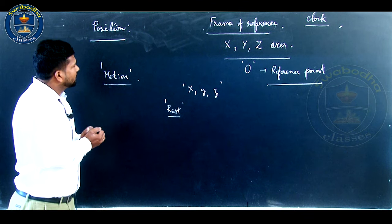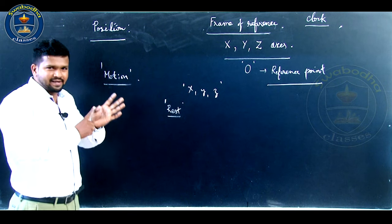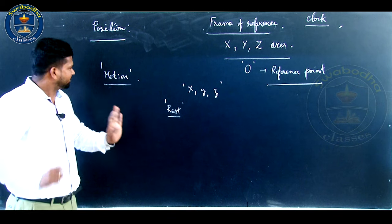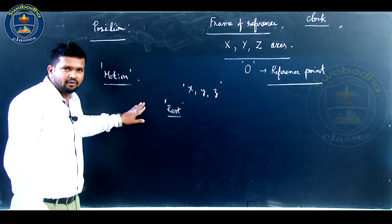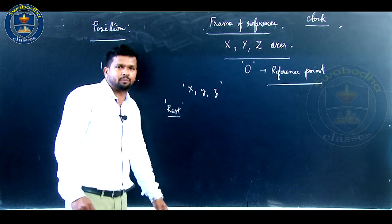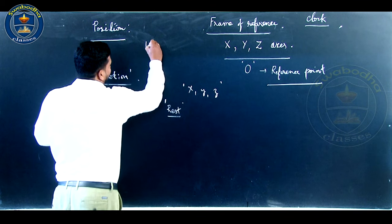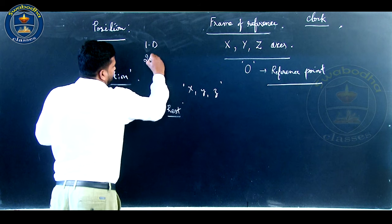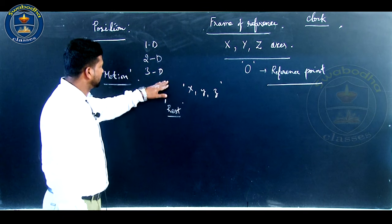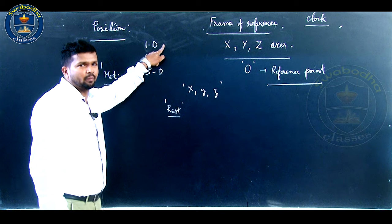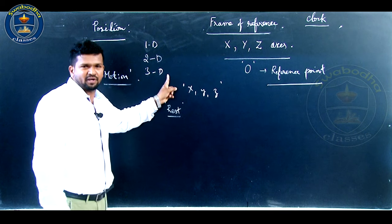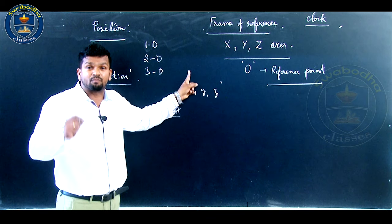You can give examples for one-dimensional, two-dimensional, and three-dimensional motion. One-dimensional motion: only one coordinate changes, motion is restricted to a straight line. Two-dimensional motion: two coordinates change, motion is restricted to a plane. Three-dimensional motion: all three coordinates change, motion is restricted to space.